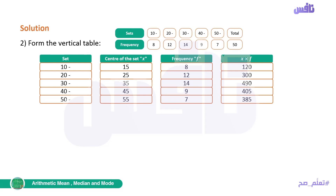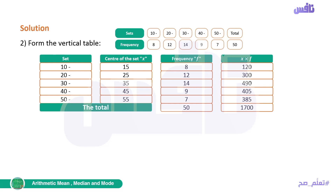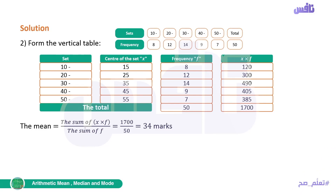After completing the table, we find the totals for two columns: frequency f and x times f. Total of f = 8 + 12 + 14 + 9 + 7 = 50. Then we add all the x×f values: it will be 1700. Now we apply the new rule: mean = Σ(x×f) / Σf = 1700 / 50. By using a calculator, the mean = 34 marks.